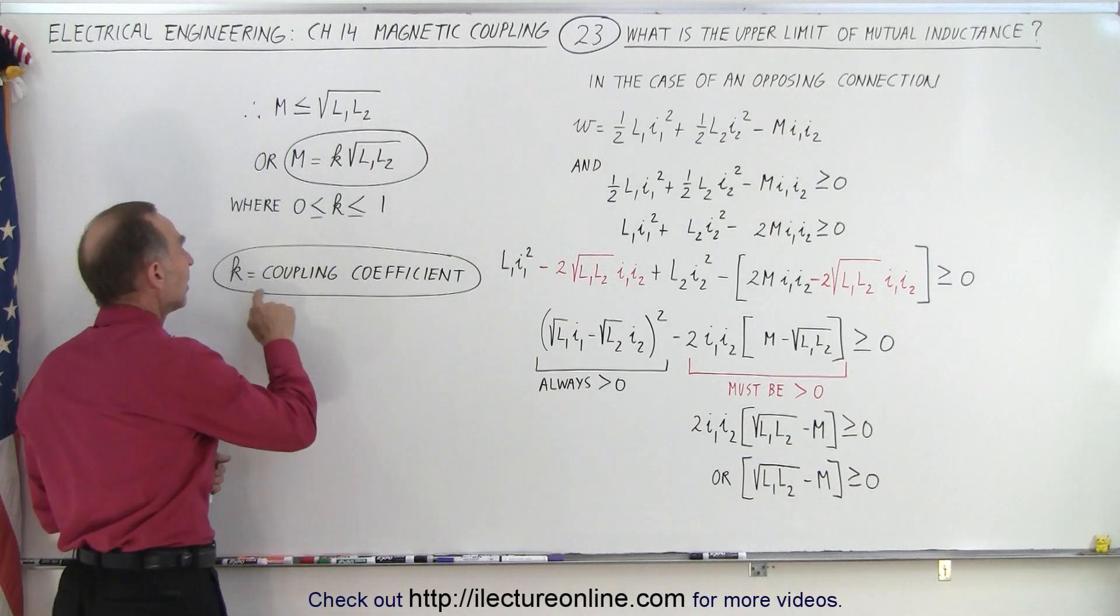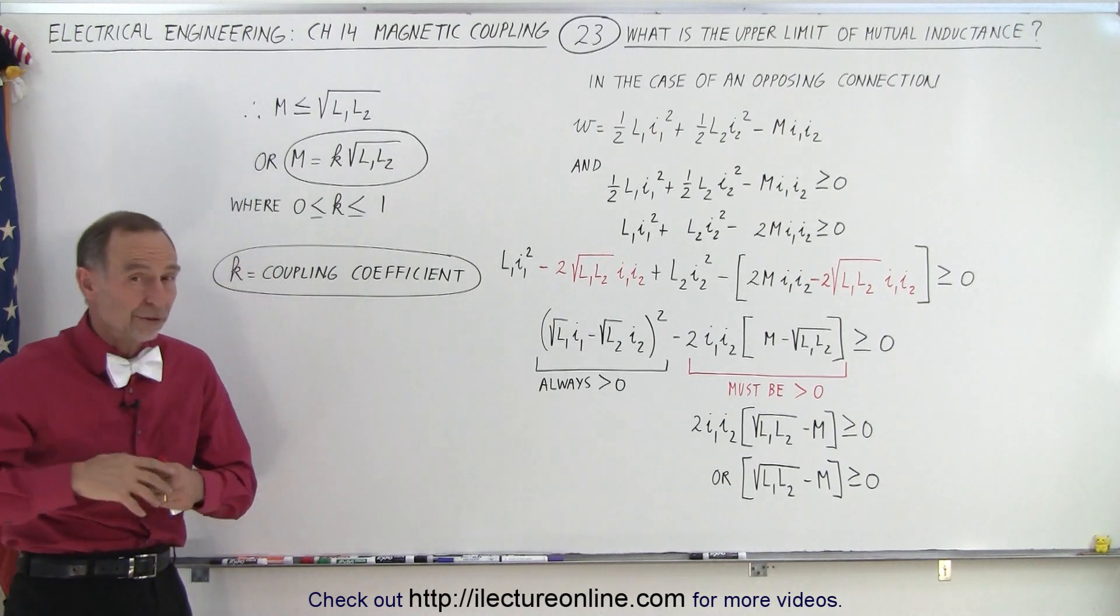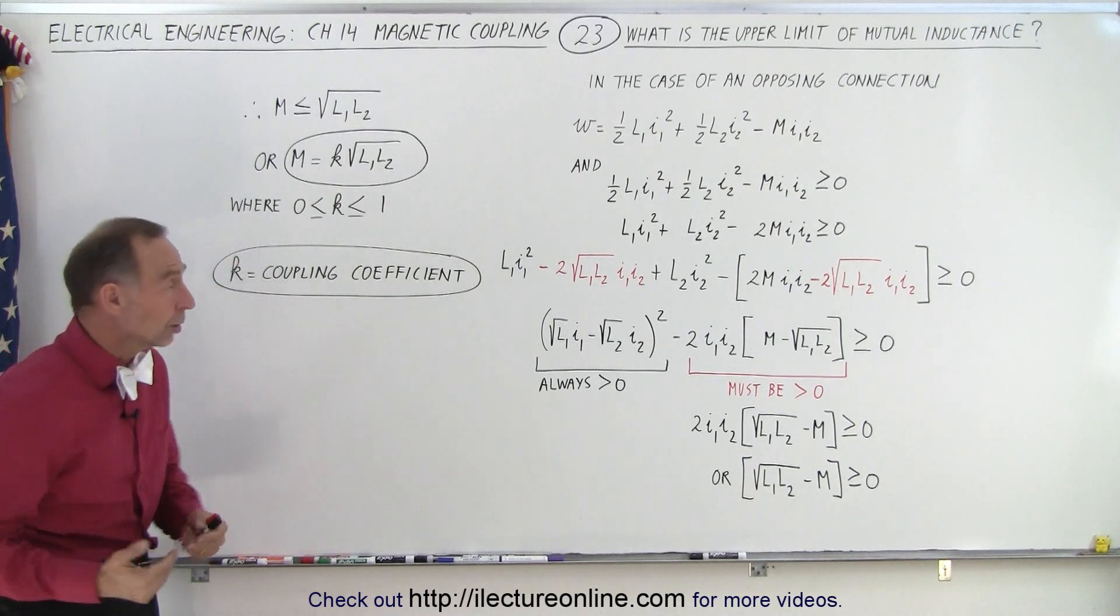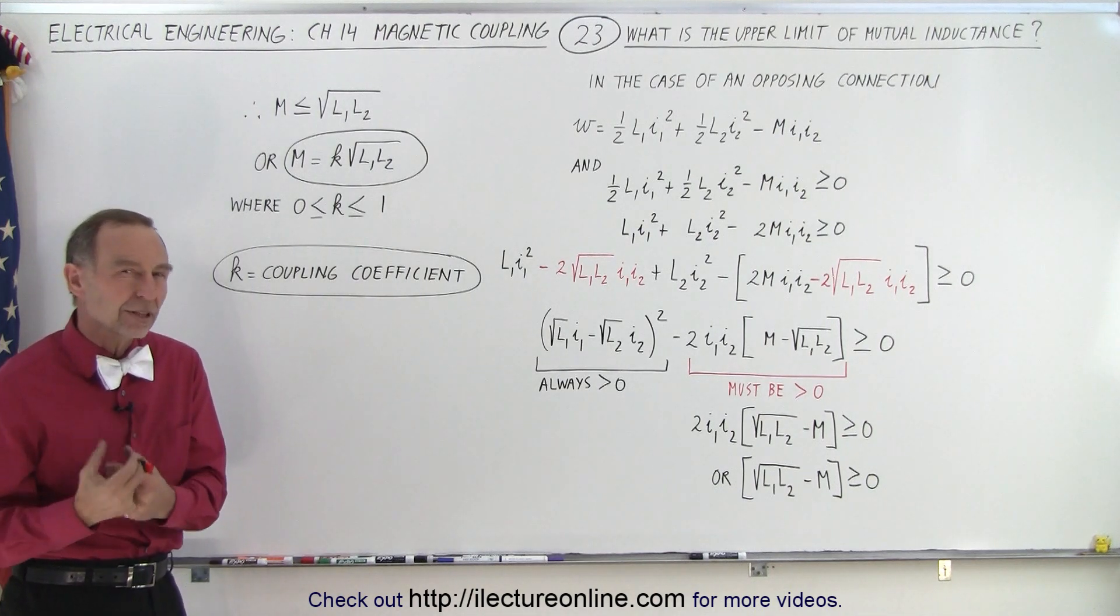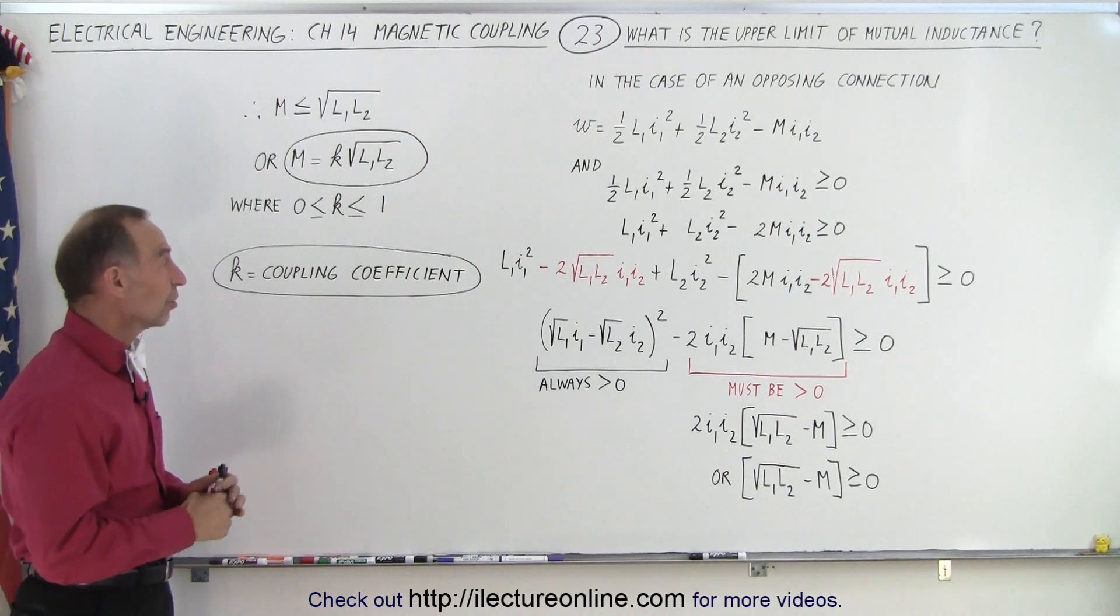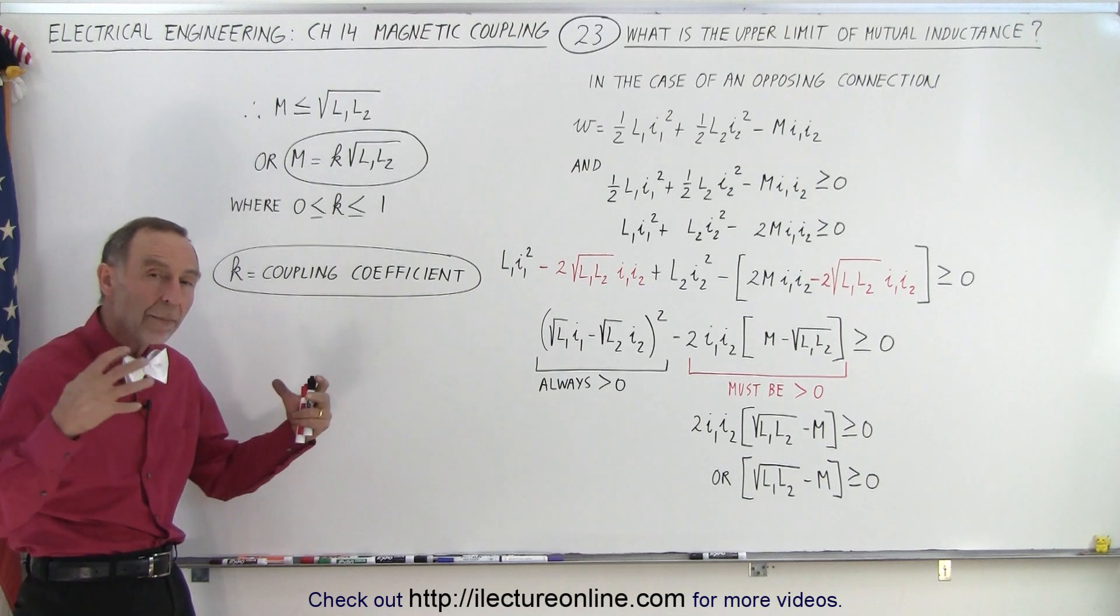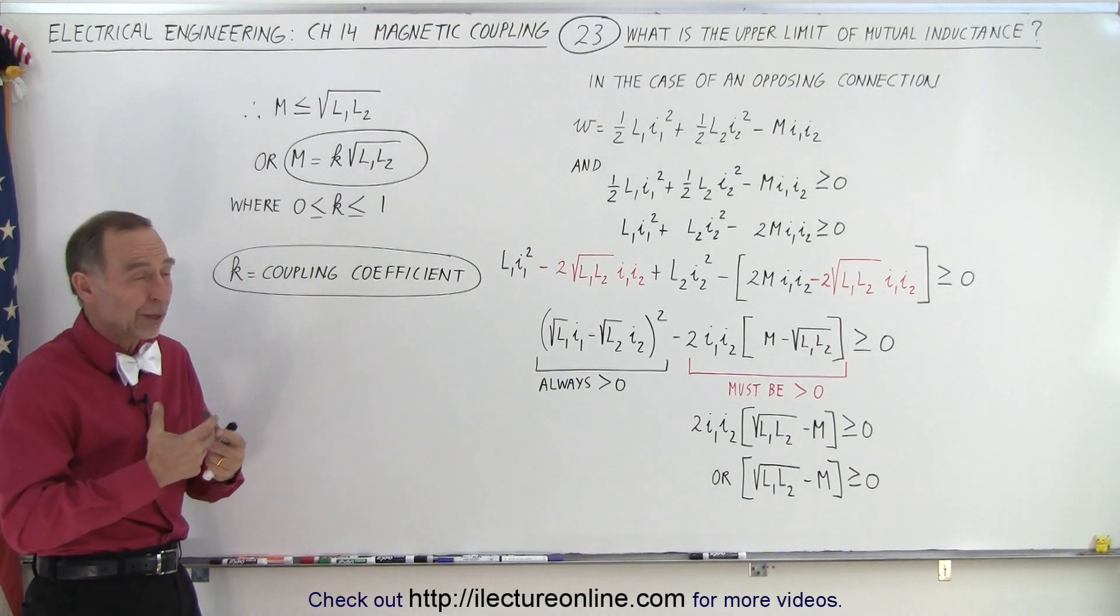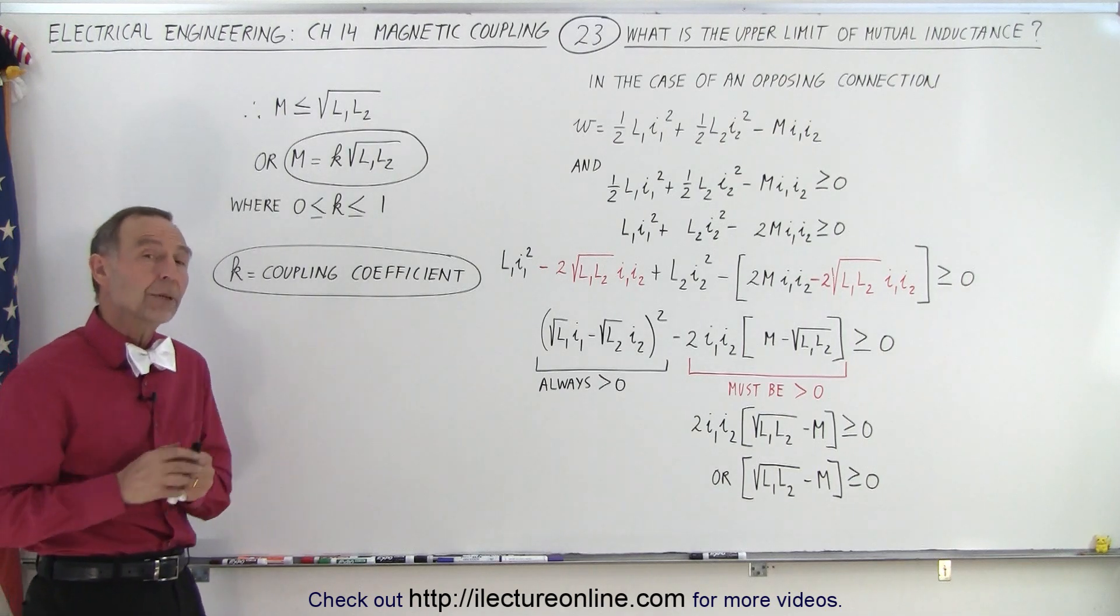Now k is then what we call the coupling coefficient. It can be anywhere from zero when there's no coupling at all, to one when you have maximum coupling, 100 percent coupling between two inductors. It's usually somewhere in between, and the value of k will give you an indication of how much coupling there is. When you have k greater than 50 percent or 0.5, that's a pretty strong coupling between the inductors. When k is maybe 0.05 or something like that, there's fairly weak coupling.